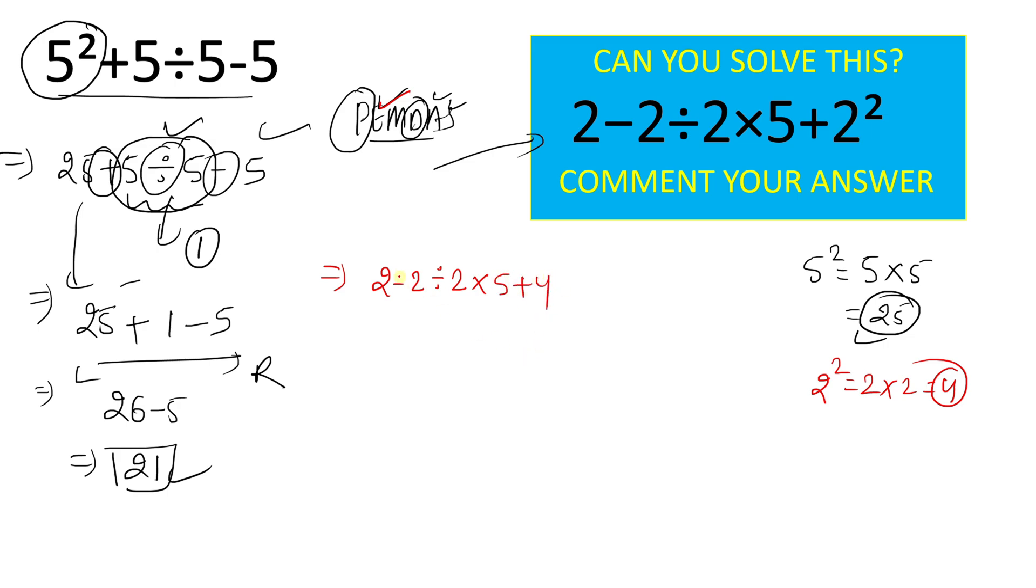Now here are 4 operations: subtraction, division, multiplication, and addition. And out of 4 operations, multiplication and division have the same priority. And these operations have higher priority than addition and subtraction. So we will do left to right operation there. And according to that, first we have to solve this division part which is 2 by 2. And this will give result 1 here. So we can rewrite: 2 minus 1 times 5 plus 4.